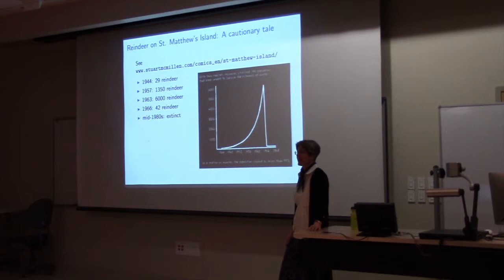Came back in 1966, there were 42 reindeer on the island. 41 of them were female. One was an infernal male. In the mid-1980s, there were no reindeer left on the island. Here is a graph that shows the growth in population for the reindeer and its very sudden crash.